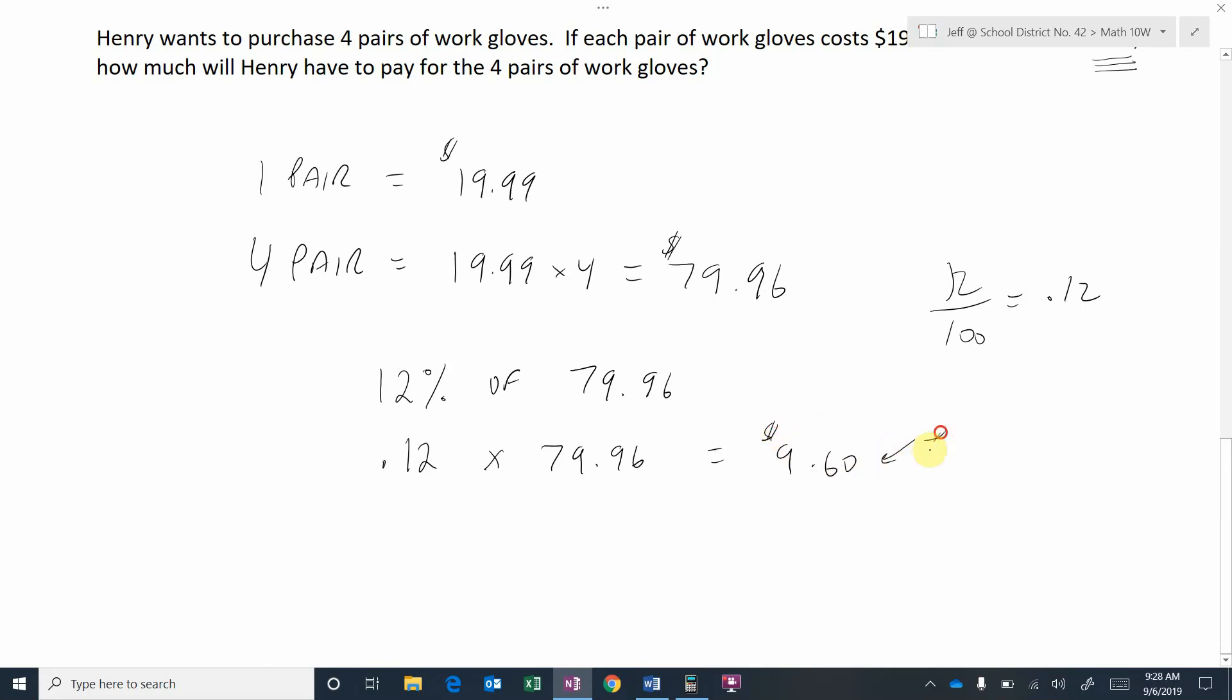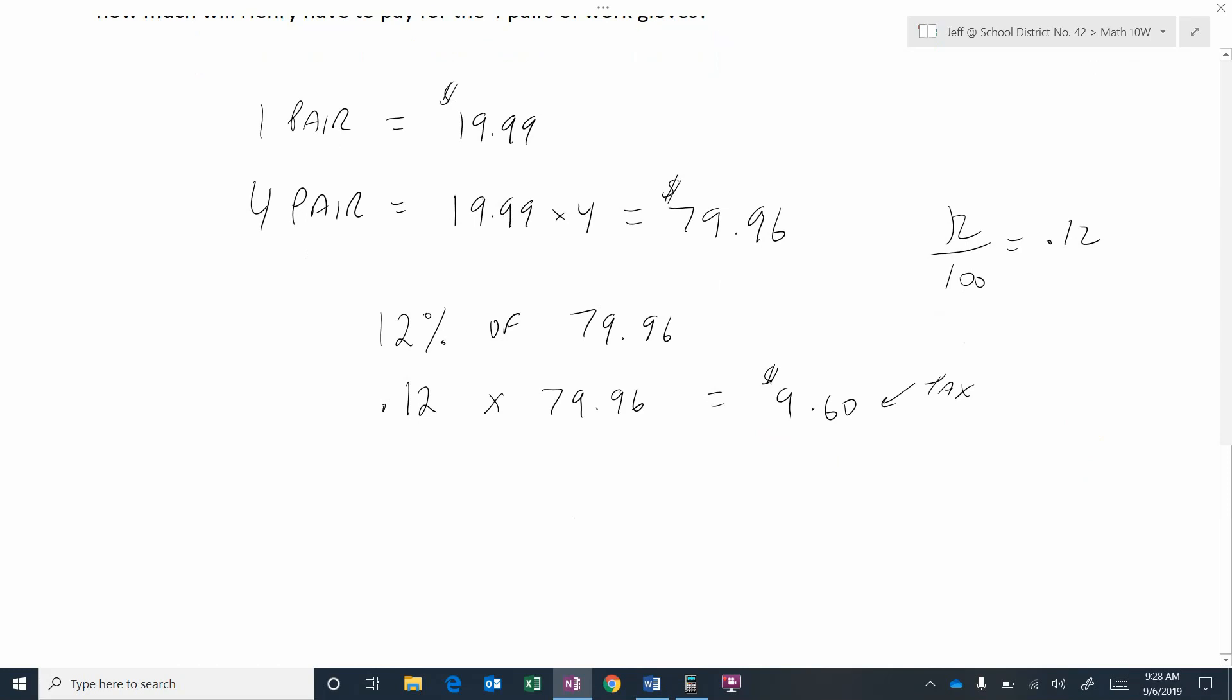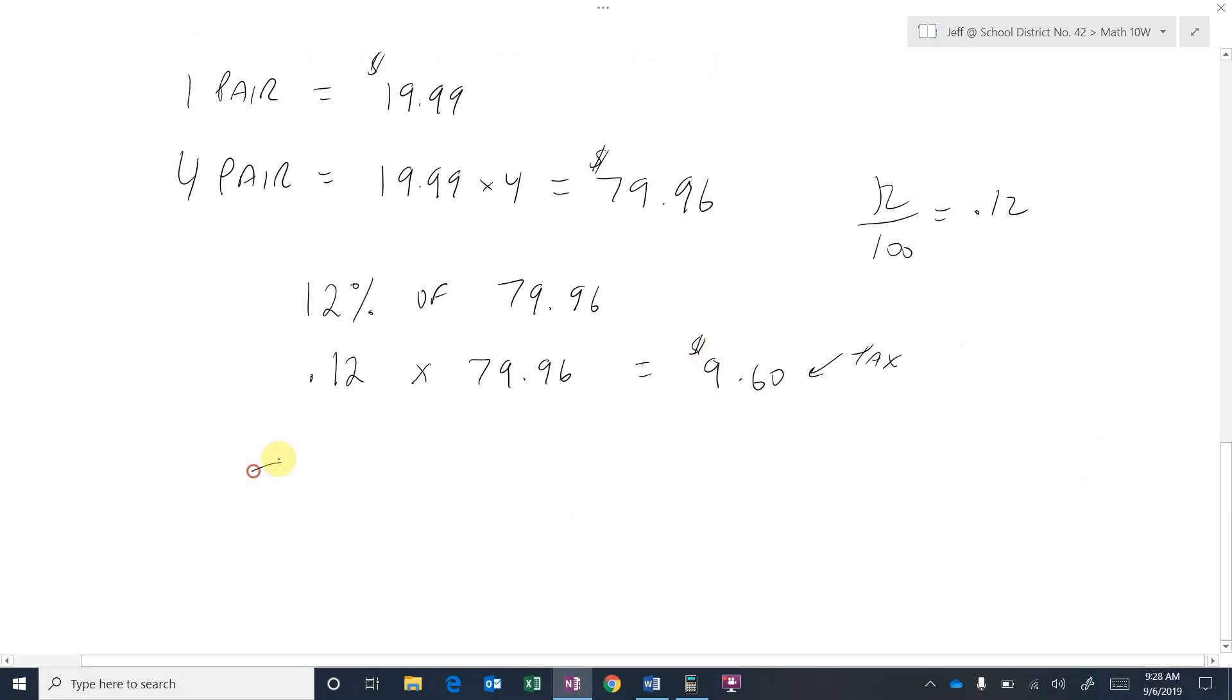So nine dollars and sixty cents is going to be the tax. That would be the 12%, so that much money is going to go to the government for the taxes.